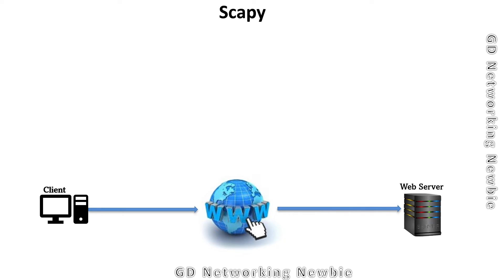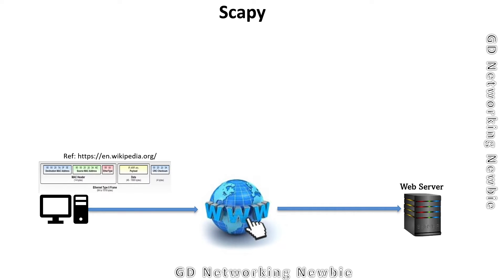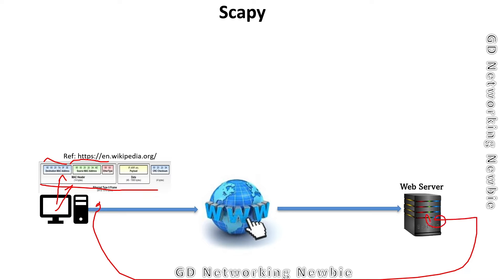In this video we are going to discuss Scapy. But first, let's revise: when we are on our network and one computer, let's say a client machine, wants to send something to a web server, any two computers exchanging information will send and receive that information in the form of packets or frames. In a frame, there are different fields containing the IP address and MAC address of the computers.